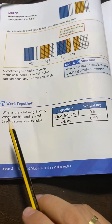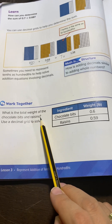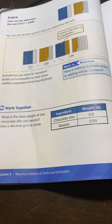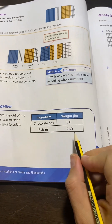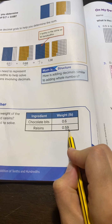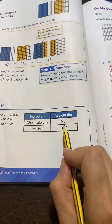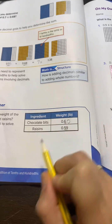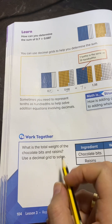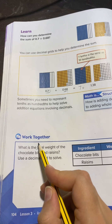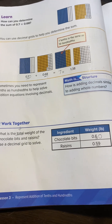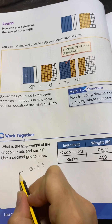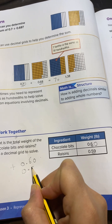Now let's take an example. What is the total weight of the chocolate bits and raisins? Use a decimal grid to solve. The raisins have 2 digits after the decimal, so it's hundredths. But the chocolate bits have only 1 digit — it's tenths. How to make it the same? You will add a 0 to make it 2 digits. Since the question says 'total,' that means add. So I will use 0.60 plus 0.59.